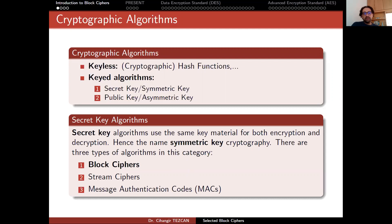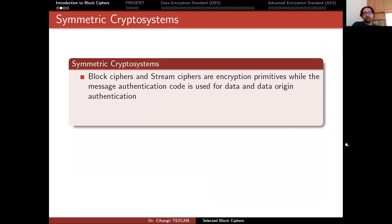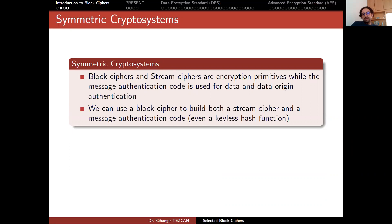There are three types of algorithms in this category: block ciphers, stream ciphers, and message authentication codes. We will see all of them in this course, but we started with block ciphers, then we will move on to stream ciphers and message authentication codes. Block ciphers and stream ciphers are encryption primitives, while message authentication codes are used for data and data origin authentication. These three topics are not completely distinct — we can use a block cipher to build both a stream cipher and a message authentication code, and we can even build a hash function.